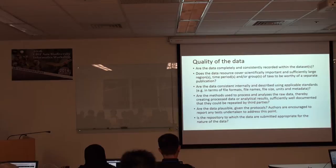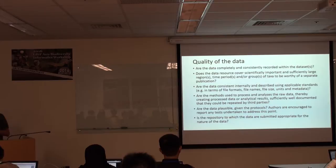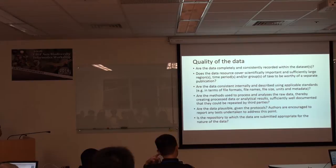Are the data resources scientifically important for a sufficient large region? It depends on how you explain the importance of your dataset, and also on what kind of organism you are studying — how many species, and whether rare species are different in conservation terms. Also, are the data consistently internally described using IPT standards? We're using Darwin Core terms and the Darwin Core Star schema.